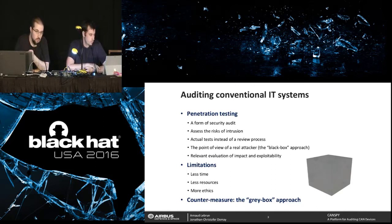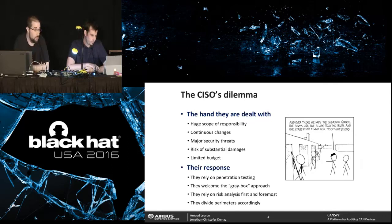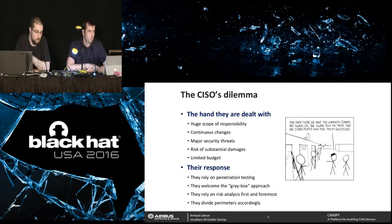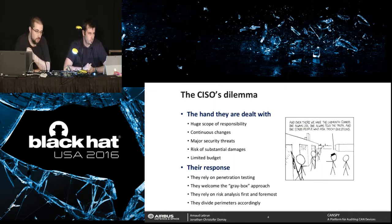In the gray box approach, we ask the customer to provide just enough information to level the playing field between us and a real attacker, compensating for our additional constraints. Done properly, we do not fall back into a white box approach — we're still doing actual tests. This is very welcome by stakeholders because they usually have a huge scope of responsibility that changes continuously, and they need to improve security as much as possible with a limited budget. They provide us with just enough information, and they rely on risk analysis to identify the most critical parts to audit first.